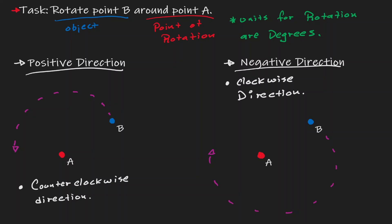An important property that we have for rotation, regardless of which direction we take, is that the object is always the same distance to the point of rotation. So the distance from A to B is the same distance as from A to any other location on the rotation path. You can think of the object as creating a circle around the point of rotation, and the distance from the point of rotation to the object is the radius of that circle.